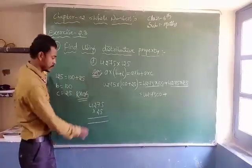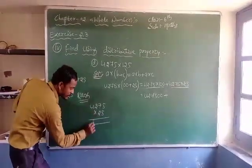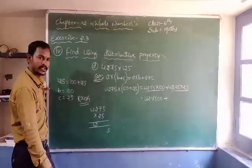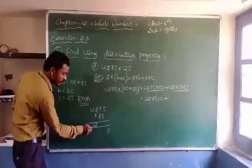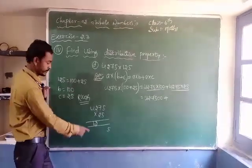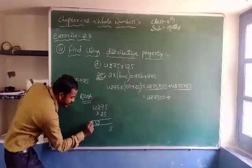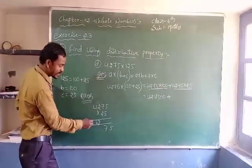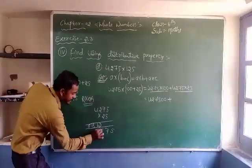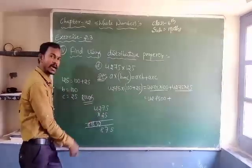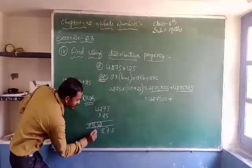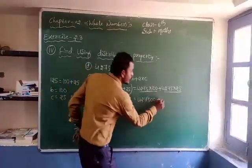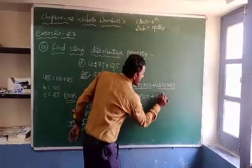So 25 — 5 fives are 25, carry 12. Then 25 sevens are 175, plus 12 is 187. Then 25 twos are 50, plus 18 is 68. 25 fours are 100, plus 6 is 106. So the product of these two numbers is 106,875.